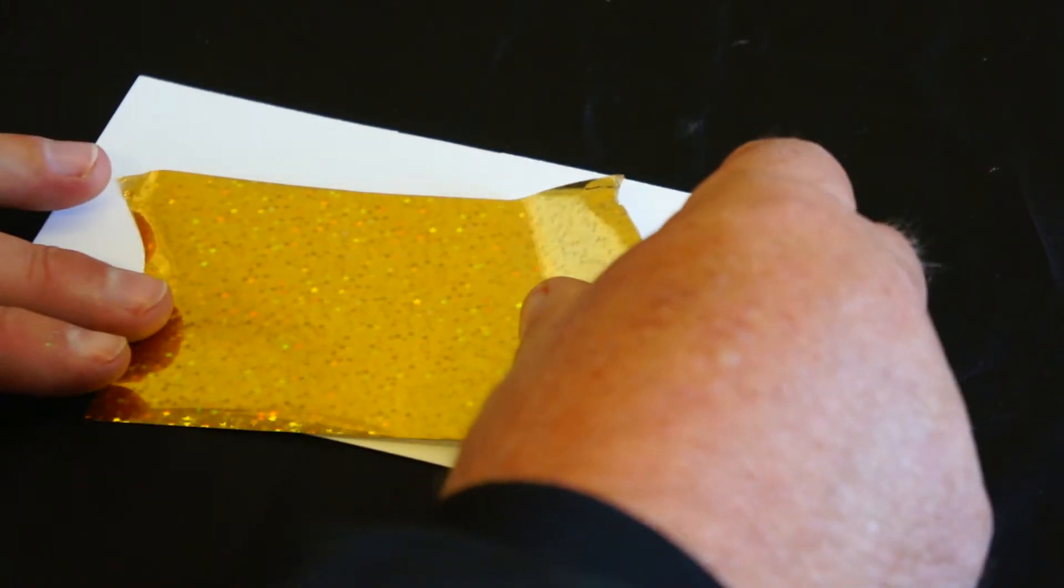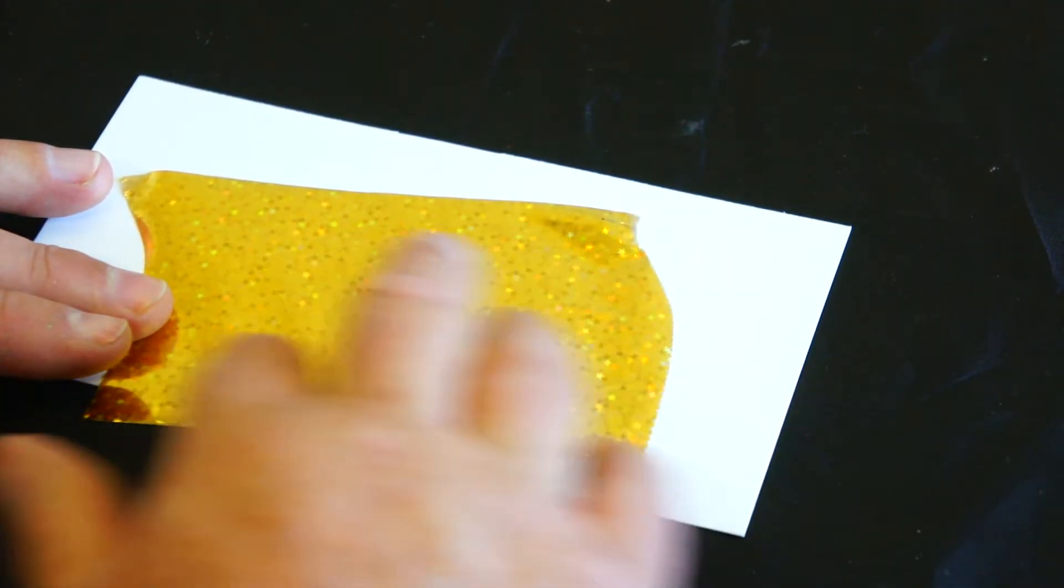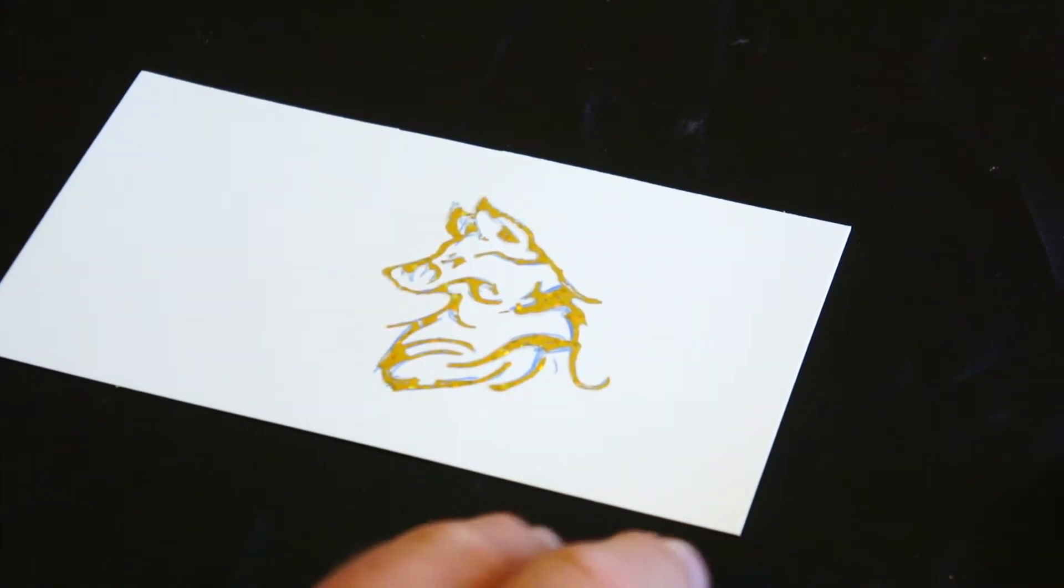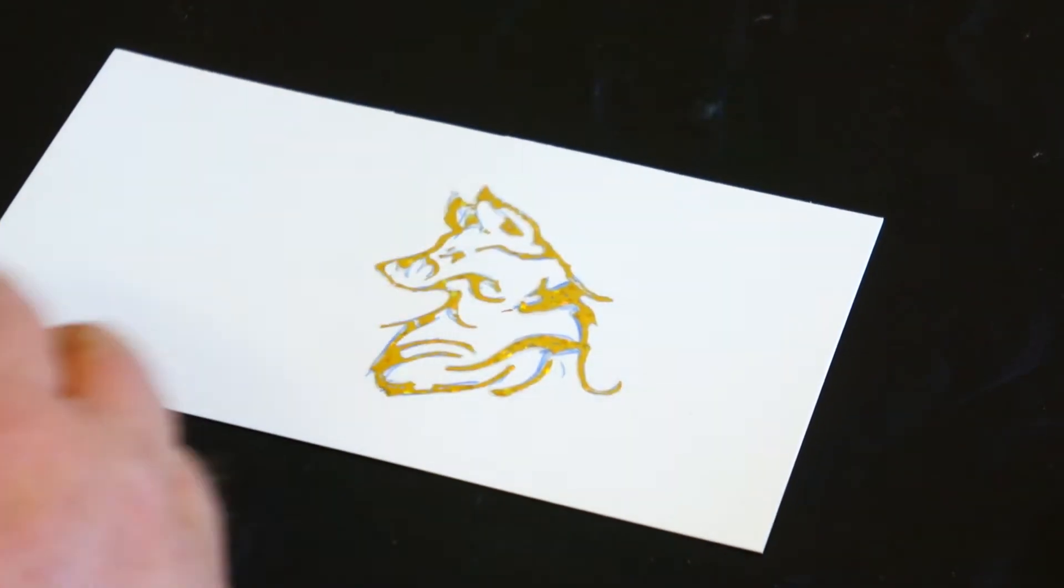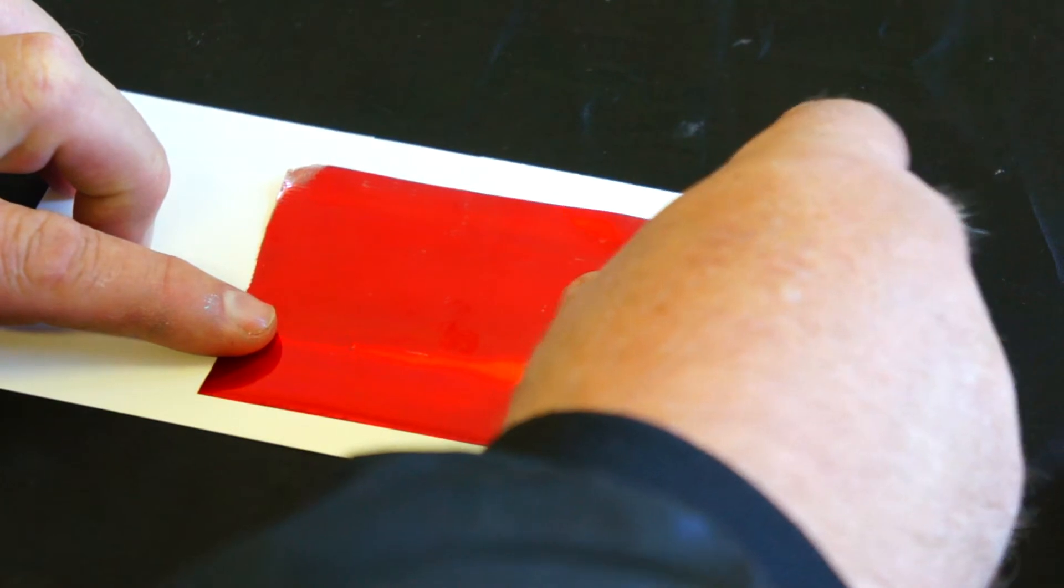When I pull the foil off, it will be rather patchy. That patchiness allows me to apply another color, because the patchiness means there is glue that hasn't got any color attached to it.